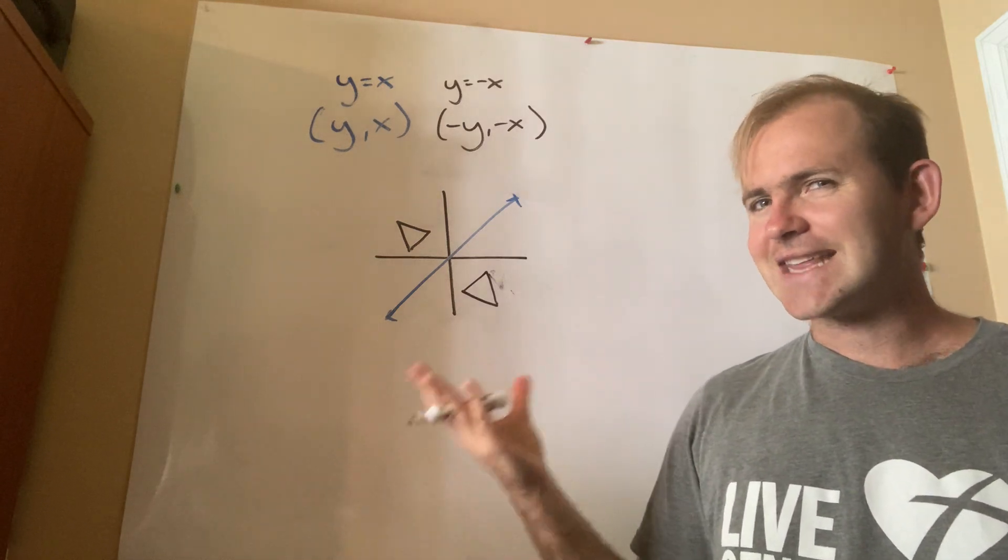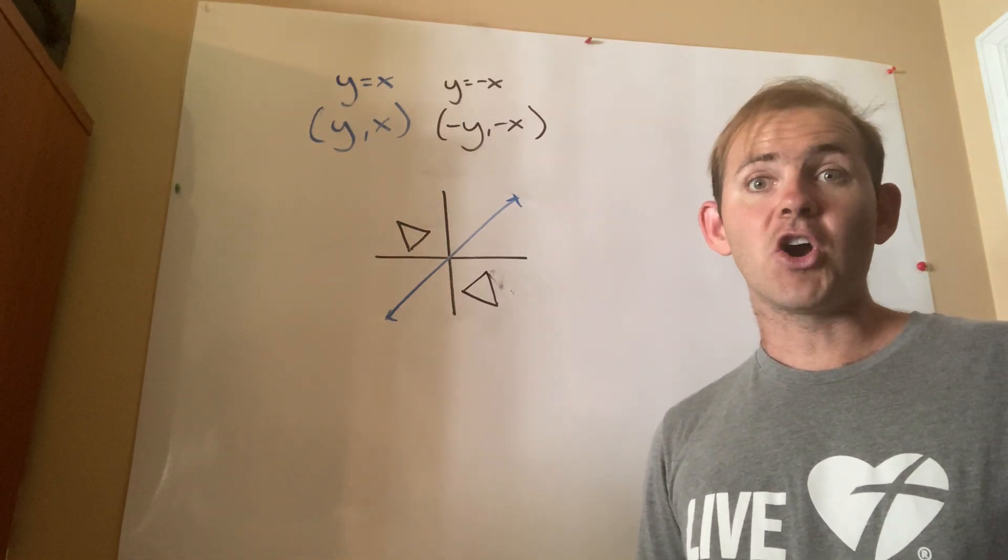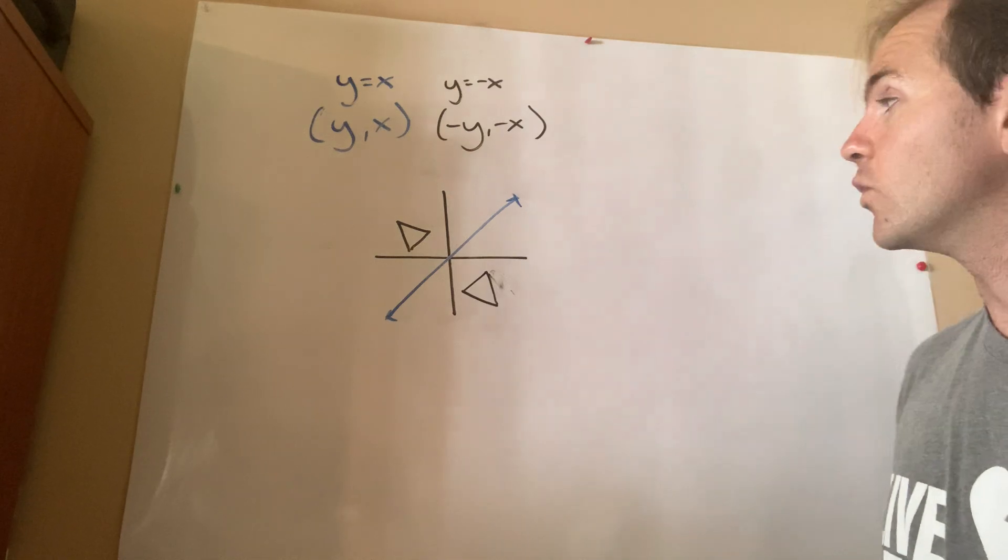The only difference is, because the line is slanted, it's diagonal, we're going to have a little bit of a harder time finding the coordinates than we would otherwise.